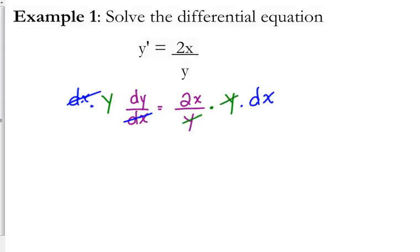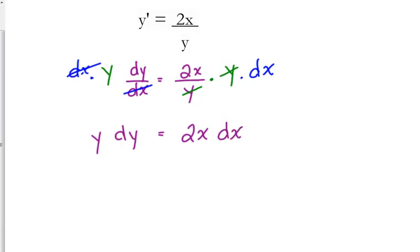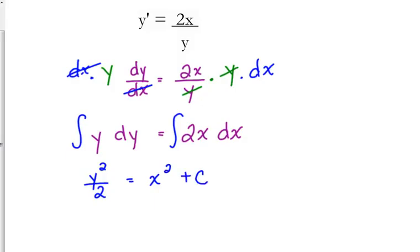That cancels there, and that cancels there. So what we are looking at is y dy on the left side and 2x dx on the right side. We're trying to figure out what y was originally, so we are going to integrate both sides. If we integrate y with respect to y, that is y squared over 2. The integral of 2x with respect to x is x squared, and that's where we throw the plus C in.